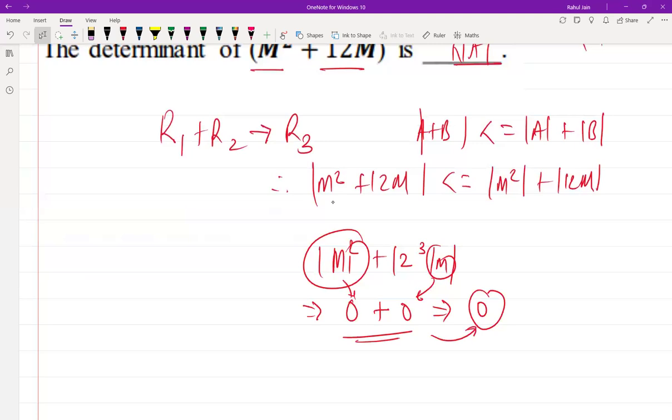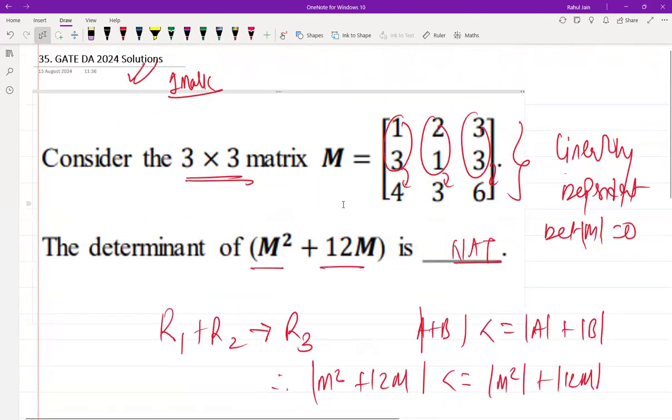Due to linear dependency, if you just recognize this property, you will directly answer it is 0. I hope it is clear to everyone.